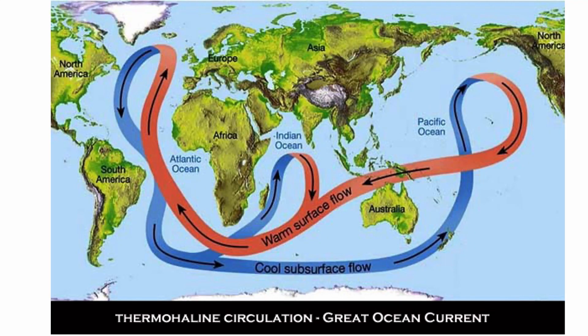Here you have a picture of the global ocean circulation. All of the oceans are connected by one big circulation system that we call the conveyor belt. In blue, you have cool subsurface currents, and in red, you have warm surface currents. In the North Atlantic, cool, dense, very saline water sinks to the bottom of the ocean, and that sinking motion basically drives and entrains the whole conveyor belt circulation.